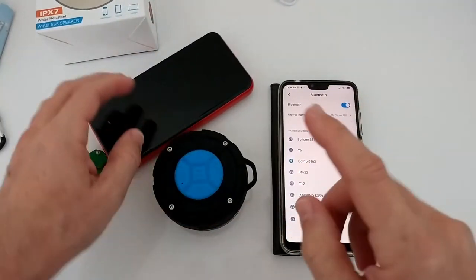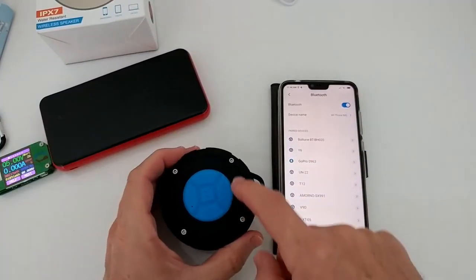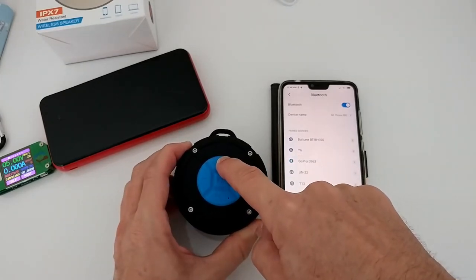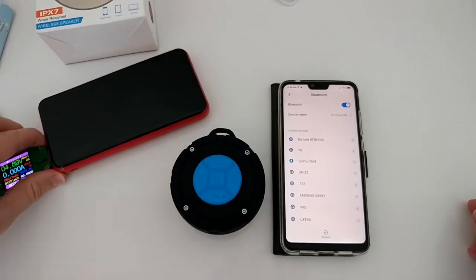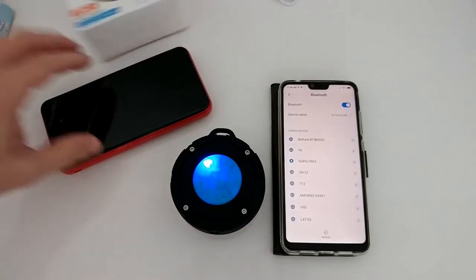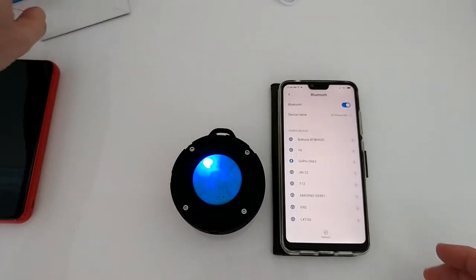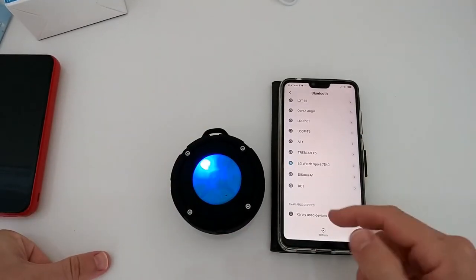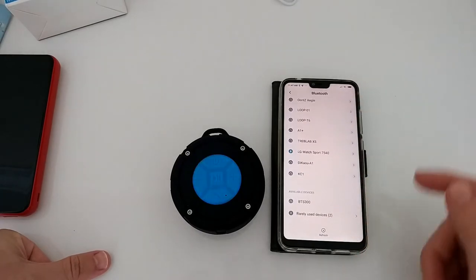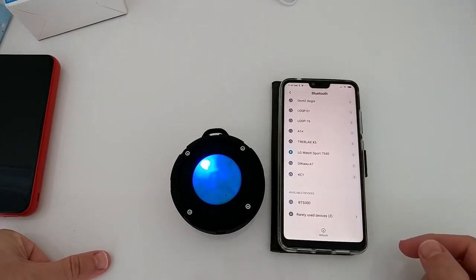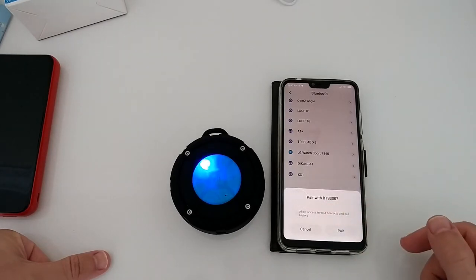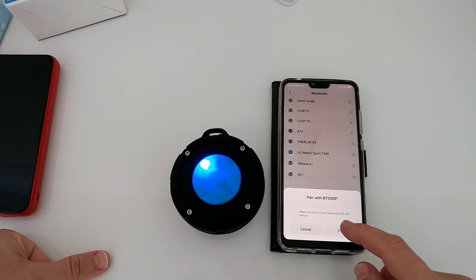I'm unplugging this and trying to connect. I've already turned on Bluetooth here. We have to push for a couple of seconds and you can see the blue light blinking. That means we should be able to connect. We do the refresh, it usually takes a little bit, and we find the BTS-300. We have to allow access to contacts and call history.